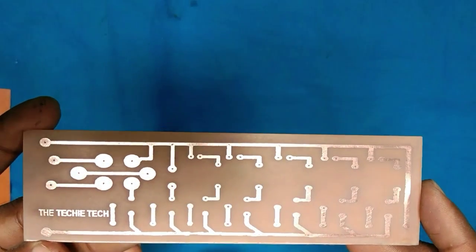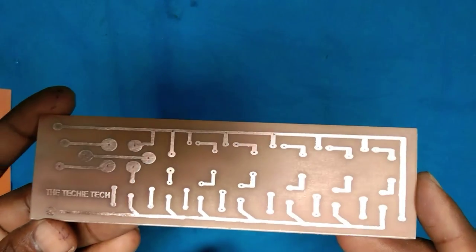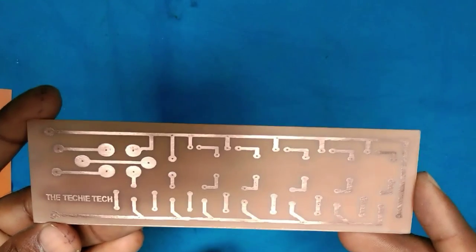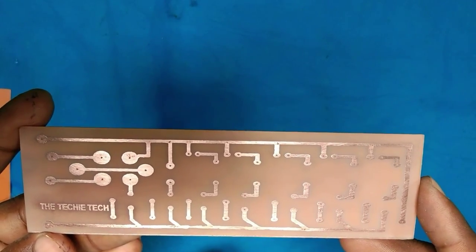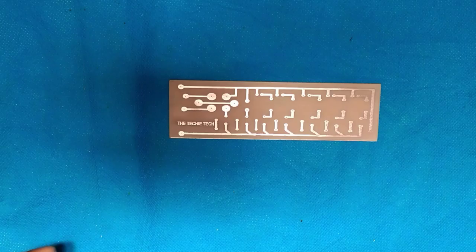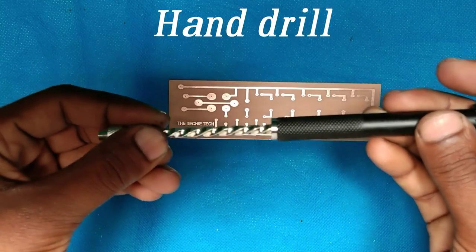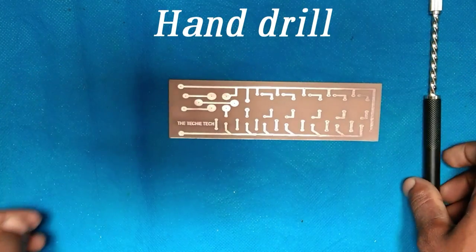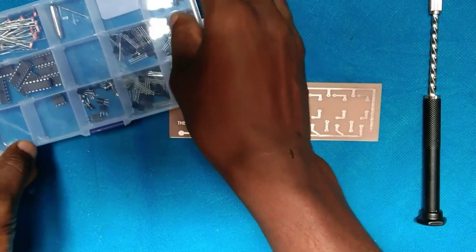After cleaning, you will get your desired smooth finish printed circuit board. But it is not yet ready for installing the components. We will need to drill holes for soldering the components. For that, we are using a hand drill. Link is given in the description box. You may also use an electric drill.